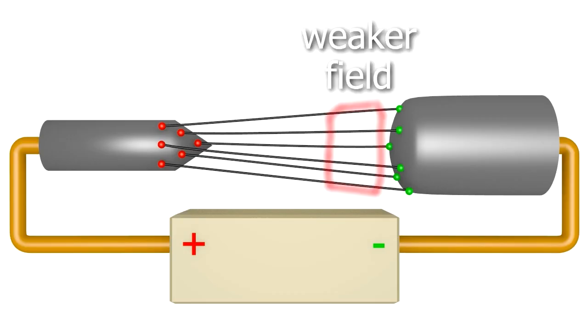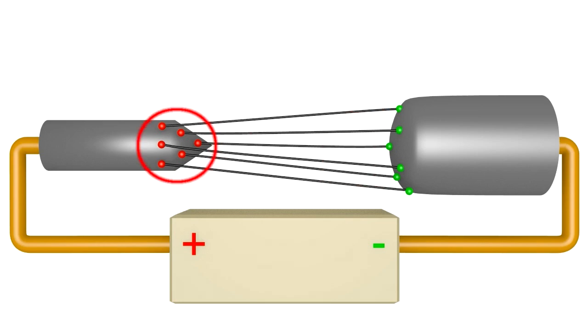The farther apart they are, like here, the weaker the electric field is. The closer they are together, like here, the stronger the electric field is. It's the closeness of charges on the sharp object that make the electric field strong here. That's why we use a sharp object in the first place, to get that strong electric field there.